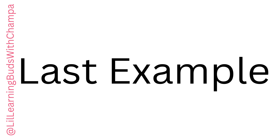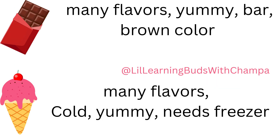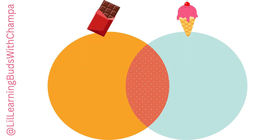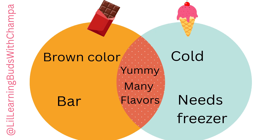Let's look at one last example — chocolate and ice cream. Chocolate has many flavors, it's yummy, comes in a bar, and is brown in color. Ice cream has many flavors, it's cold, it's yummy, and needs a freezer. Go ahead and pause the video, think about it, draw on a piece of paper, and then play the video. In the chocolate circle we write: brown color and bar. In the ice cream circle we write: cold, needs freezer. And the overlapping intersection has the common things: yummy and many flavors.